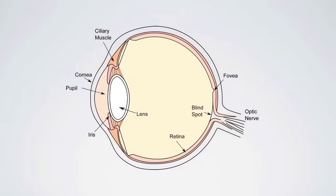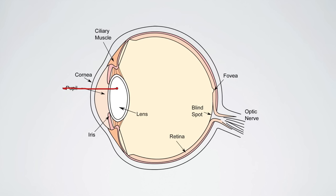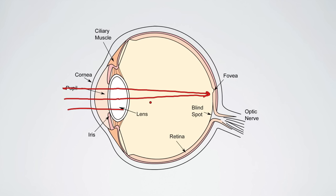Let's do a little bit of a review. We've been talking about the eye. In order for us to see something, light bounces off an object — and in the previous episode we said that object was an attractive young lady. Light bounces off her, goes through the pupil, then through the lens. The lens focuses the light onto the retina, especially in the fovea where we have a lot of rods and cones.